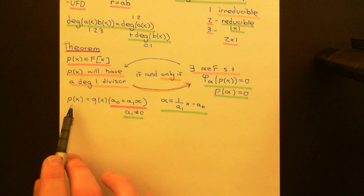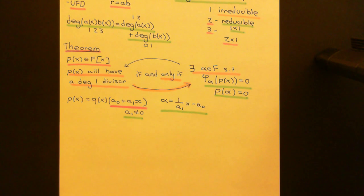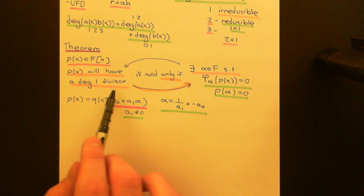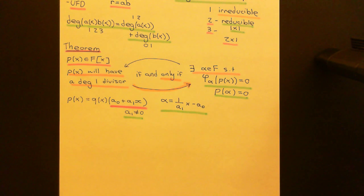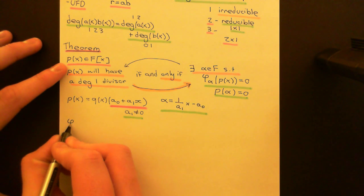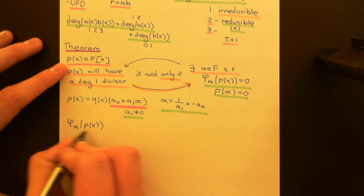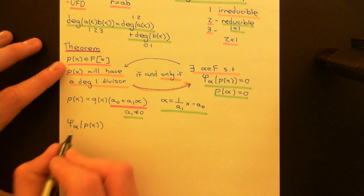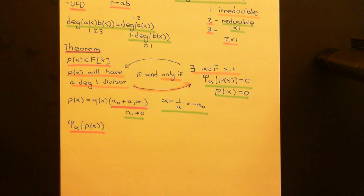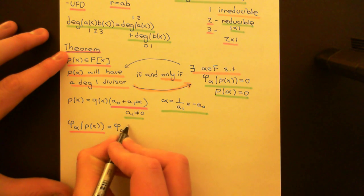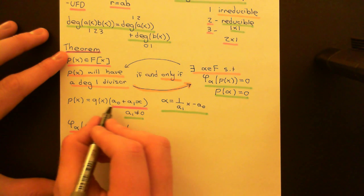I claim that if you then evaluate the polynomial P of X at this alpha, you will actually find that it's equal to 0. Let's apply the evaluation homomorphism to P of X. I can apply it to the right-hand side, and here's where I'll use the fact that it's a ring homomorphism. Because it's multiplicatively compatible, I can break up this product into the evaluation homomorphism applied to Q of X times phi sub alpha of A0 plus A1 times X.